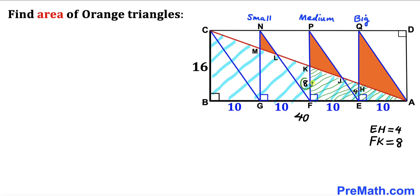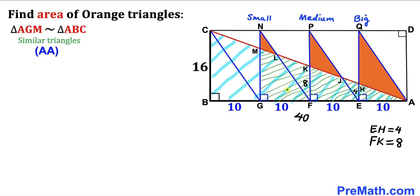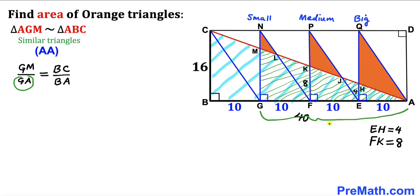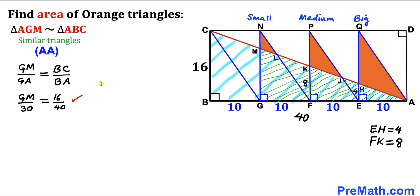Now let's focus on right triangle AGM and big right triangle ABC. These are similar triangles by the Angle-Angle similarity theorem. The proportion gives GM/GA = BC/BA. Our GA length is 30, BC is 16, and BA is 40. Multiplying both sides by 30 to isolate GM, we find GM = 12 units.